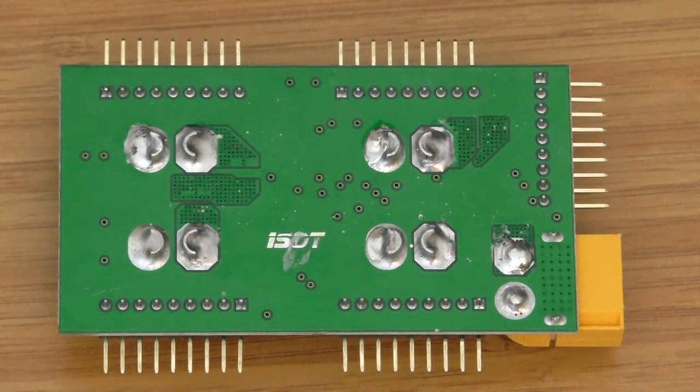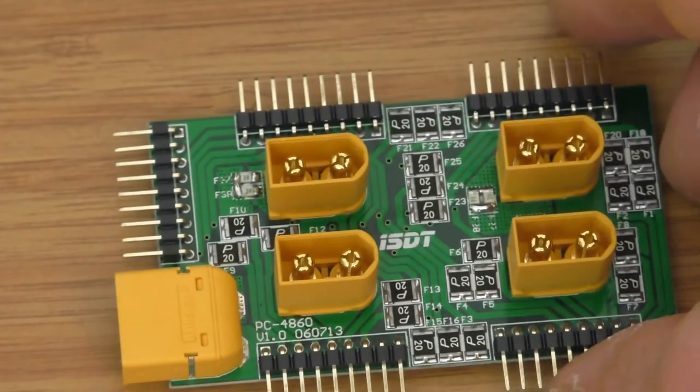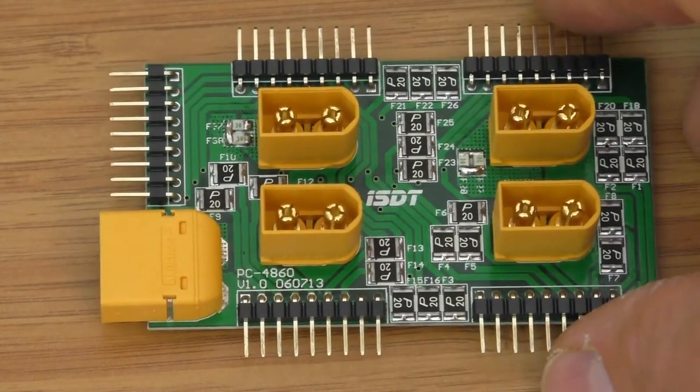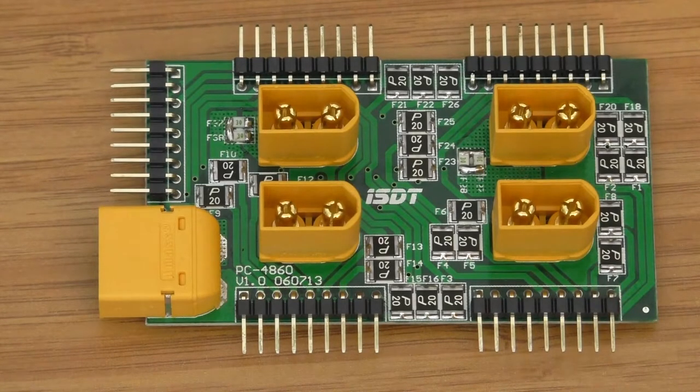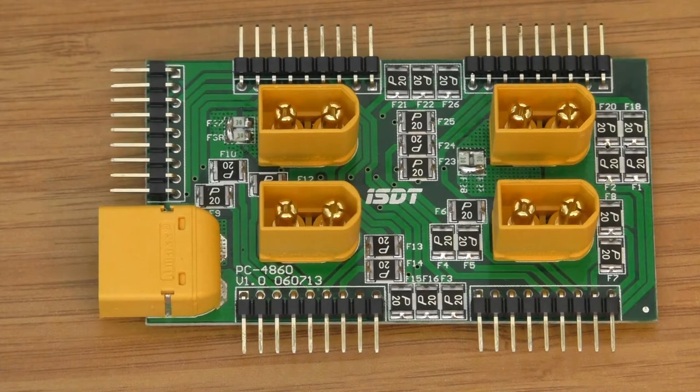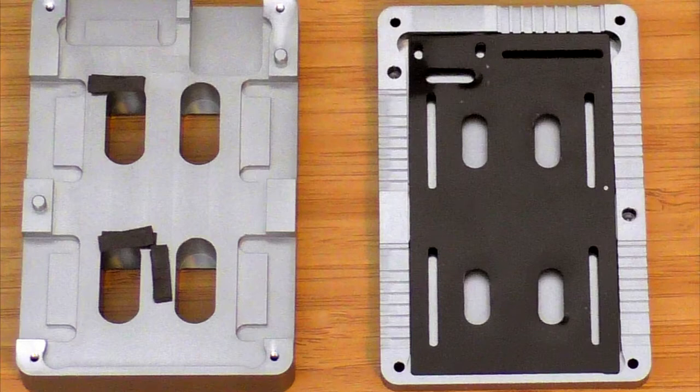Now we know that ISDT put the word safe in the name of the adapter for a reason and it's not just marketing hype. The main board looks quite well made. There are a number of self-resetting fuses on the board which protect individual cells of connected packs. There are some fuses connected to the power outputs as well and they should provide some over current or over voltage protection. The whole case is anodized which means it's not conductive, plus there is additional insulation added for extra safety.